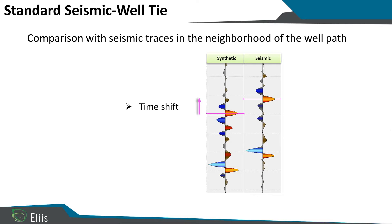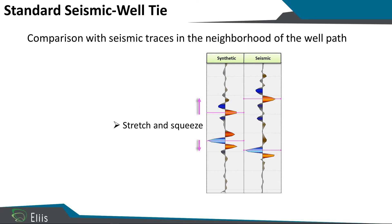The first way to do seismic to well tie is to do some time shifts. I just create one timeline, and then I just have to click on apply to do a time shift, and I make a vertical time shift of my synthetic to tie my well, exactly like this. And now as you can see, my synthetic is well tied with my seismic.